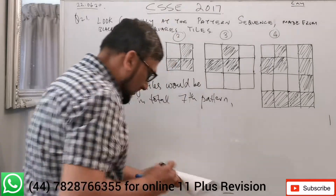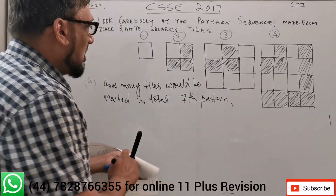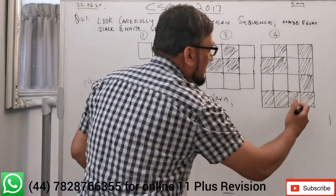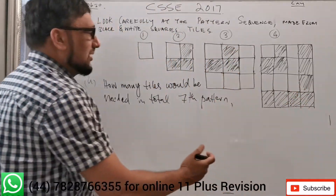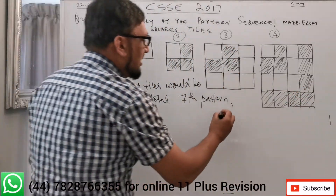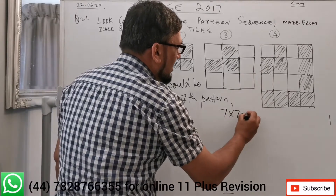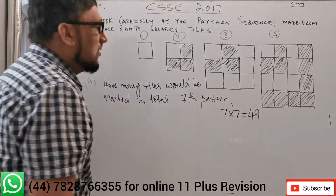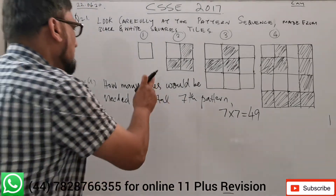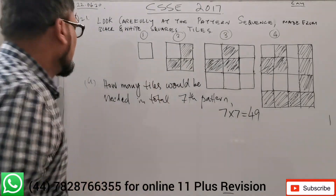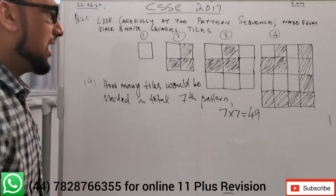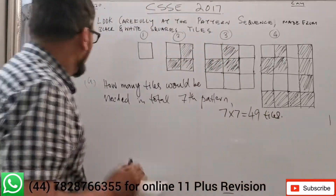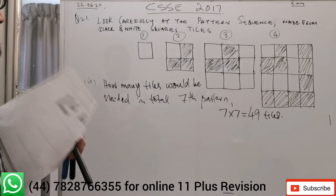So for the seventh pattern, it's seven times seven. That means they will use seven tiles horizontally and seven tiles vertically. So the total number of tiles will be 49. That's the answer for part A — 49 tiles for pattern seven.